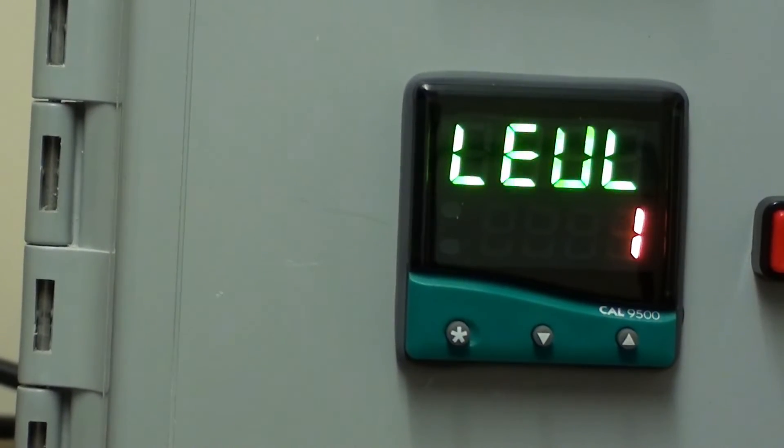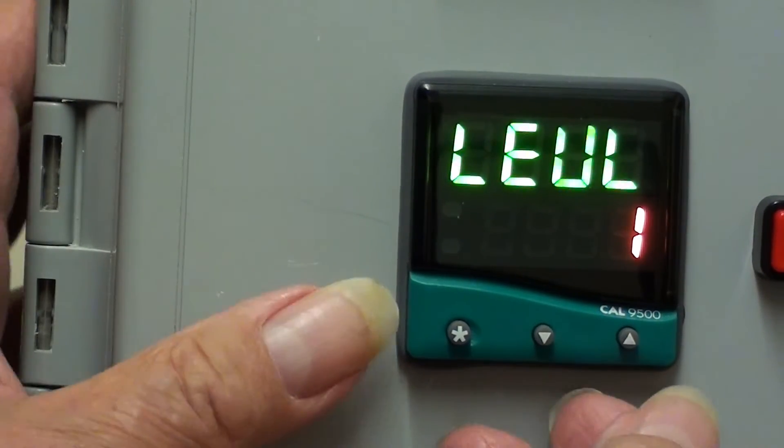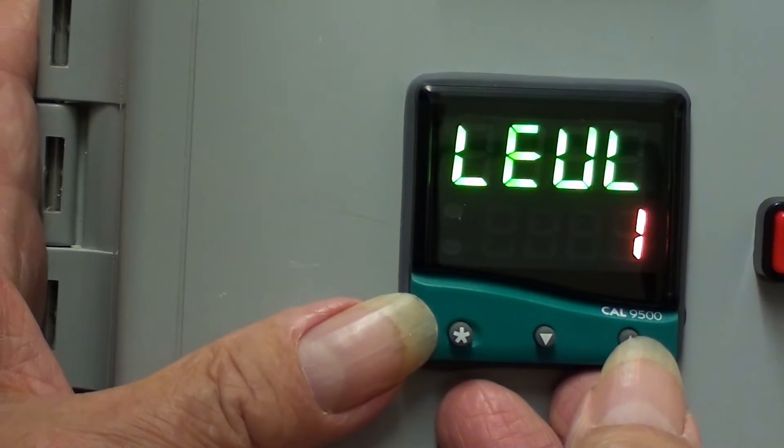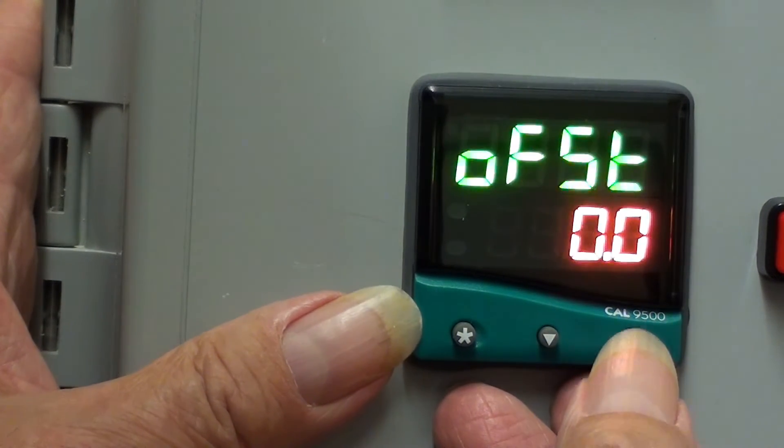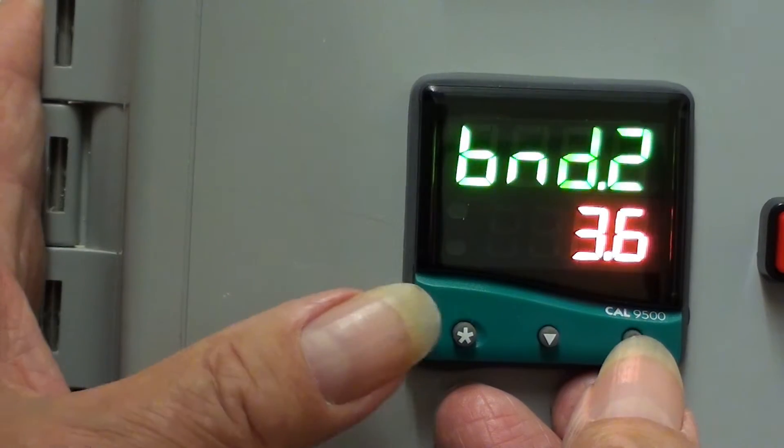Here at level 1, we can set, among other things, the PID terms. The band, integral, derivative and so on. Cycle time, set point limits.